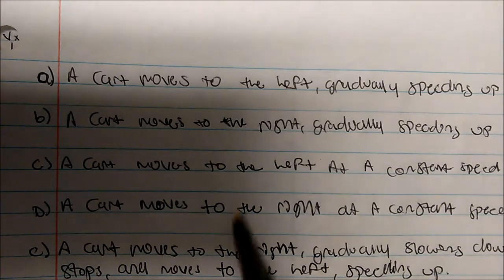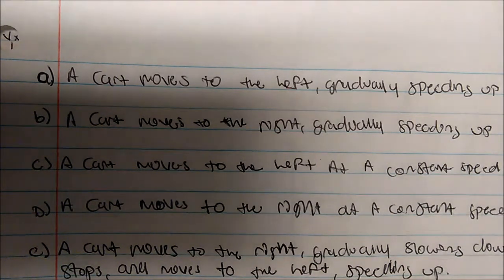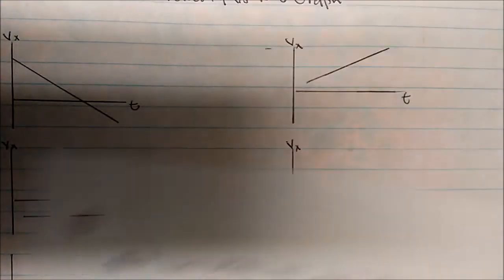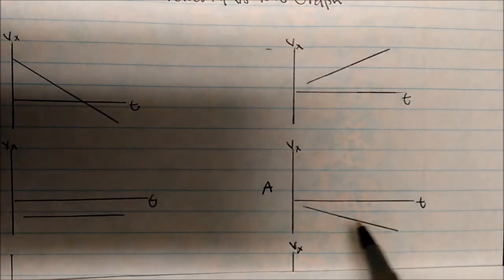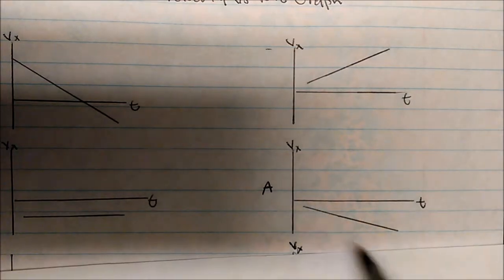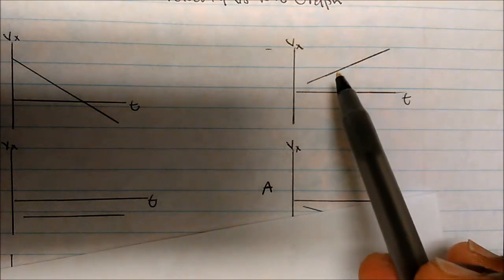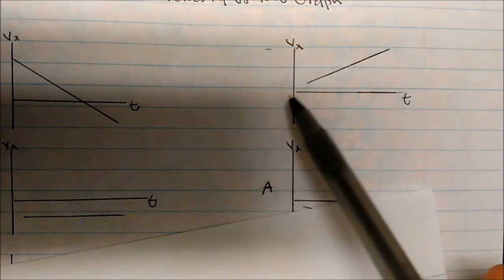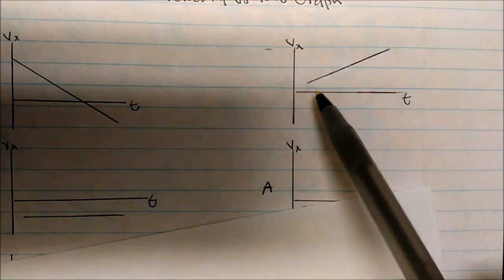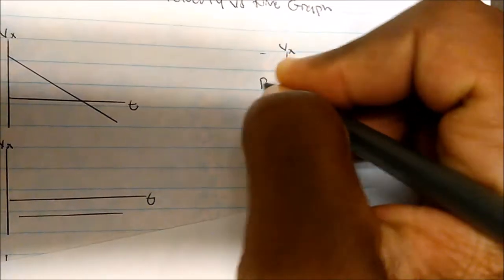The next one says a cart moves to the right and gradually speeding up. This is the opposite of the previous one. It's positive, so it's in the positive x direction, moving to the right. You can see it's going away from zero, so it's actually speeding up. Therefore, this must be B.